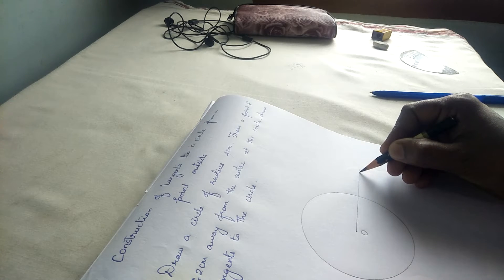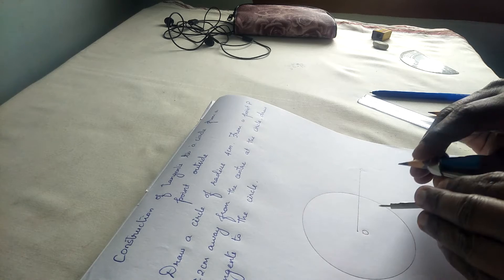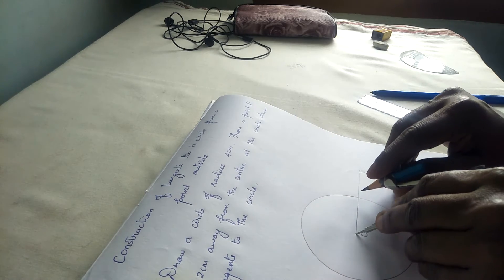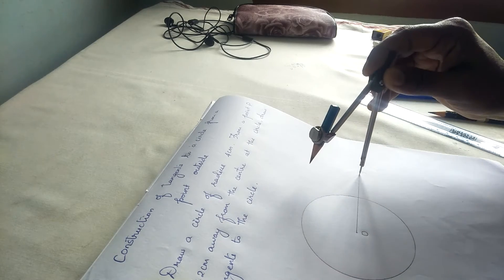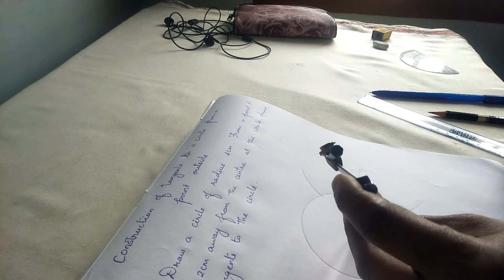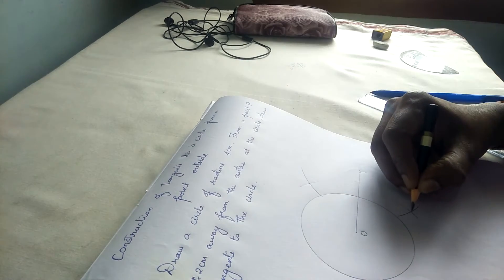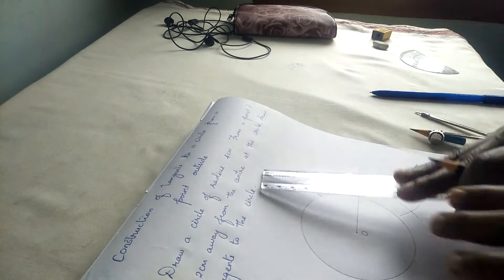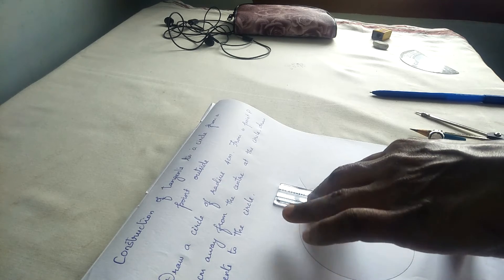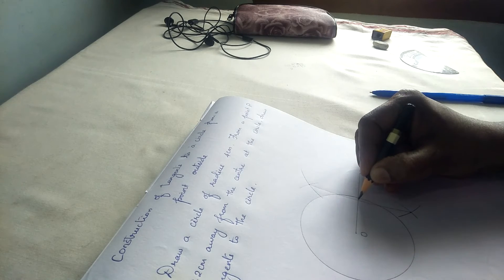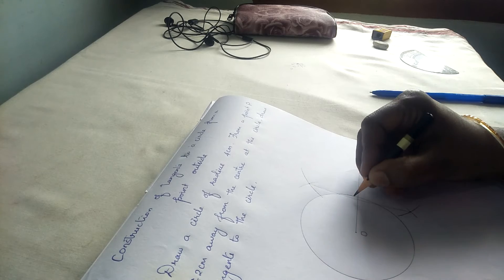We need to construct the tangents from this point P. To do that, we are going to make a bisector of OP by taking more than half. Take more than half of OP and draw arcs up and down from point P as well as from point O. Now we get the arc intersection point — let's join it. The bisector intersects the line segment OP at a point. Let's name this point as M.